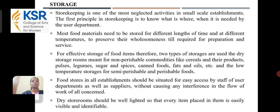The first is the dry storage room, meant for non-perishable commodities like cereals and their products, pulses, legumes, sugar, spices, canned foods, fats and oils, etc. The second is low-temperature storage for semi-perishable and perishable foods. Foods stored in an establishment should be suited for easy access by the user department as well as suppliers, without causing any interference in the flow of work of all concerned.